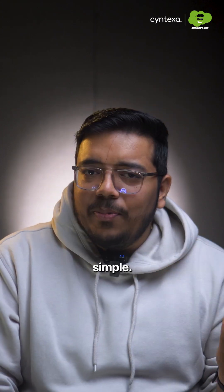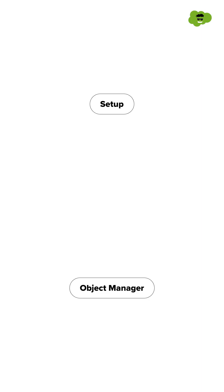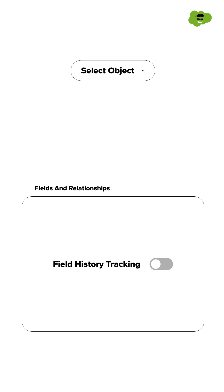The setup is very simple. Go to Setup, open Object Manager, select your object, and in the Fields and Relationships section, enable field history tracking for your chosen fields.